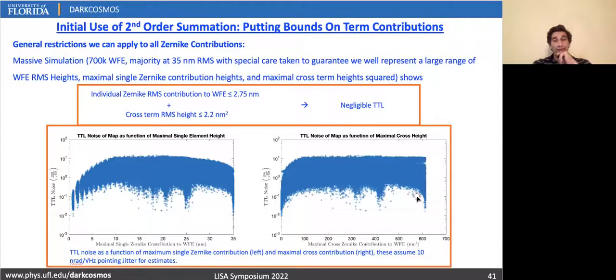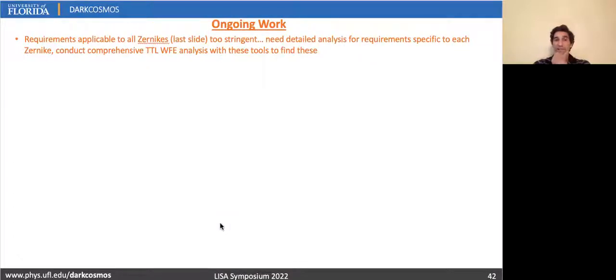And we've only begun to use this for that purpose, exploring what types of generalized requirements we can state to guarantee meeting tilt length requirements. Initial tests showed, for example, having individual Zernike contributions below 2.75 nanometers and cross-contributions below 2.2 nanometers squared, we can guarantee sub-picometer level tilt length coupling. And that was over 700,000 wavefront error tests. But the reality is that's most likely an unrealistic requirement on the wavefront error. After all, it inadvertently, with only using up to 36, inadvertently sets the RMS height of any wavefront error far below 35 nanometers anyway.